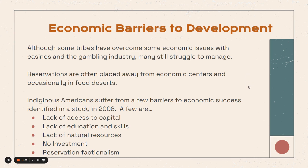There are also economic barriers to development in the Native American community. Although some tribes have overcome some economic issues with casinos and gambling on their land, many still struggle to manage. Reservations are often placed away from economic centers and are occasionally in food deserts, places where easily acquiring food is hard. Indigenous Americans suffer from several identified barriers to economic success: lack of access to capital, lack of education and skills especially on reservations, lack of natural resources, no investment from outside of the reservations, and reservation factionalism, which divides the reservation on how to best move forward.